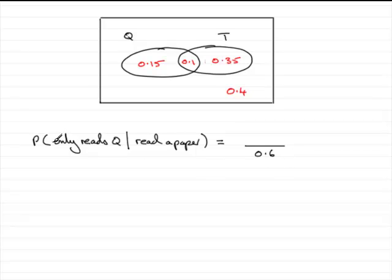Now the probability that they only read Q is 0.15, so we've got 0.15 on the top. The probability that they read Q then given that they read a paper, so reading a paper, all of this section here, what's the chances that out of all of this section that they only read Q, so it's 0.15 compared with all of this section in here.